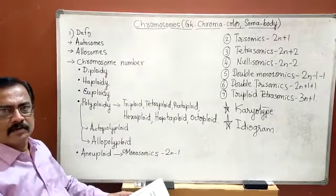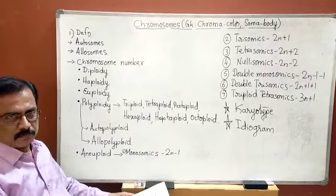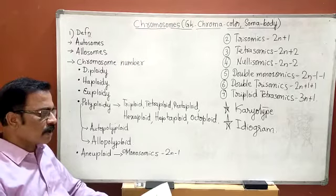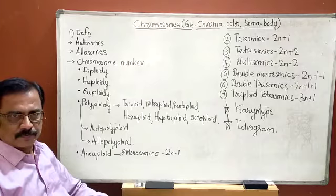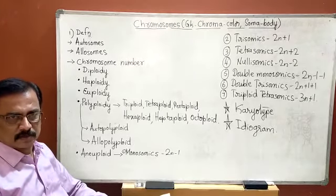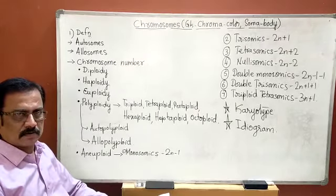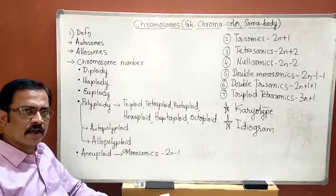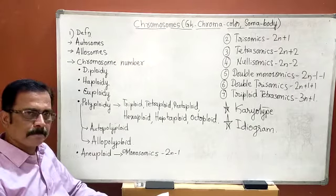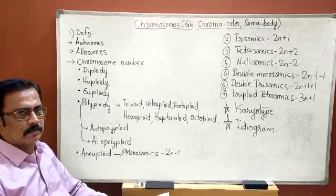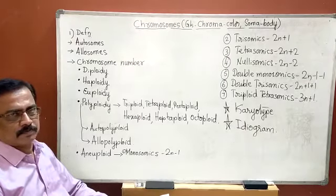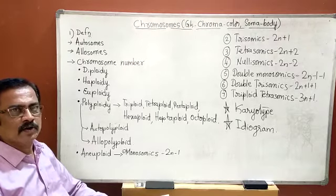So, what are chromosomes? That is the definition. Chromosomes are the nuclear components which are found in the form of network or meshwork during interphase, and found in the form of clear rod-like bodies during other stages of cell division. They contain the hereditary material — that is DNA — and carry the hereditary characters and genetic information. This is the definition, which we are going to be asked for two marks.